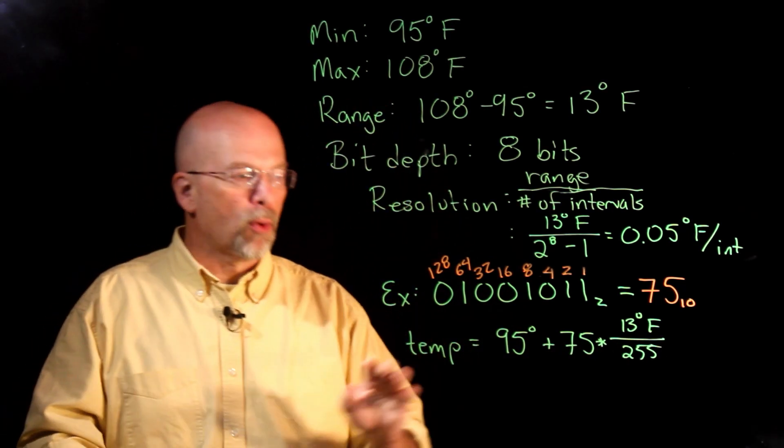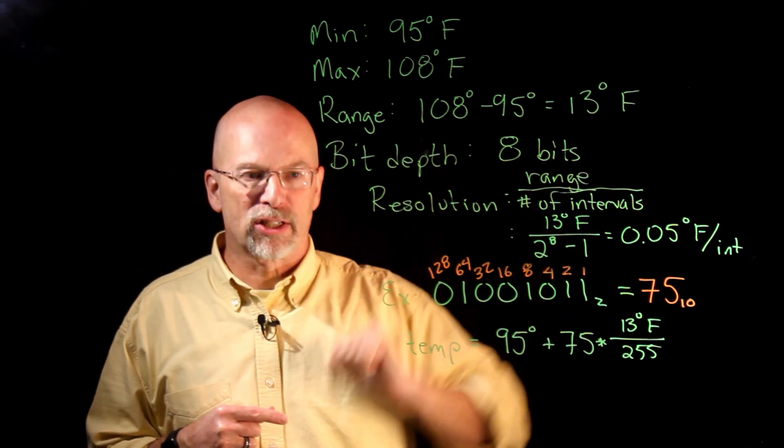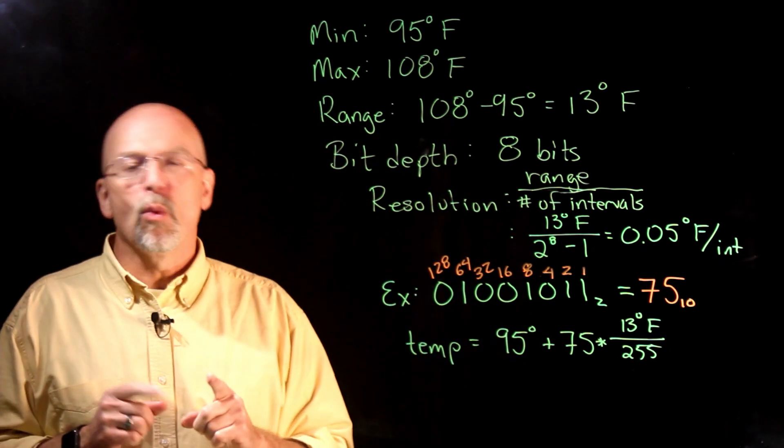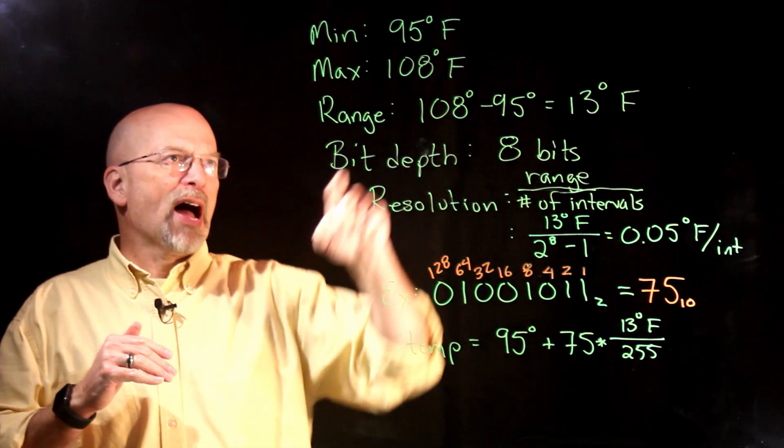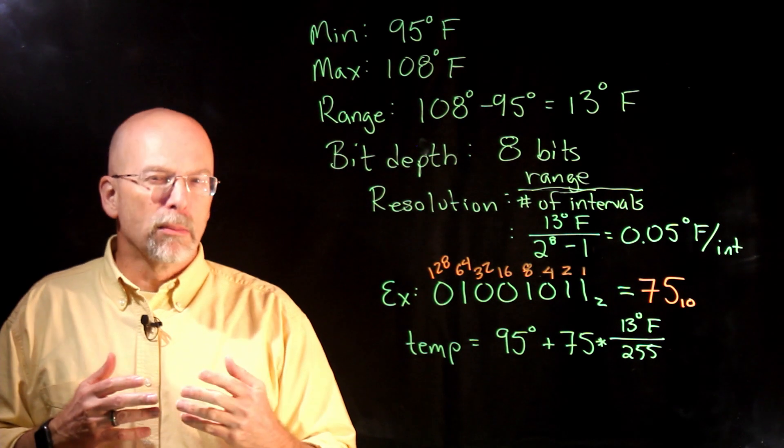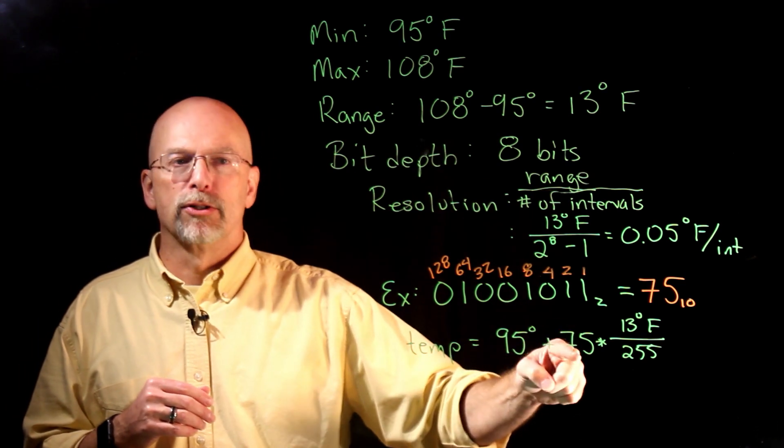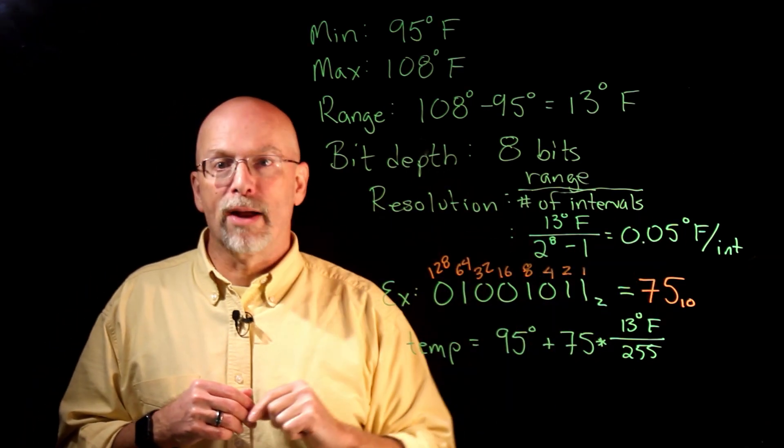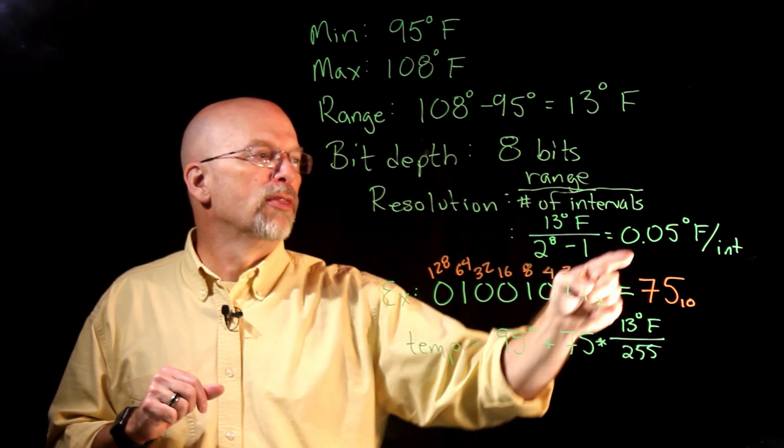Now I'm going to make a real quick point here. Notice I used the fraction 13 divided by 255 and didn't use the 0.05 degrees Fahrenheit per interval. The reason why I did not use the rounded version was because the farther I get away from 95 and the closer I get to my maximum, the larger this multiplier is going to be, and the larger the error is going to be incurred as a result of our rounding. So whenever you're doing this operation, always do the fraction. Don't do the rounded value.